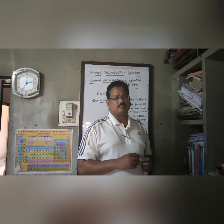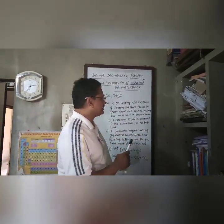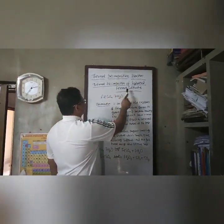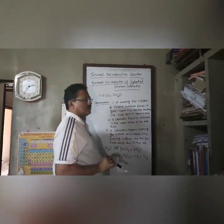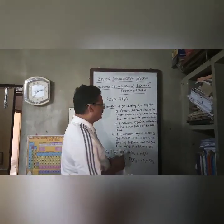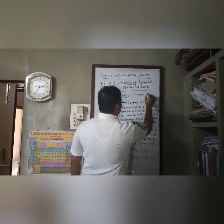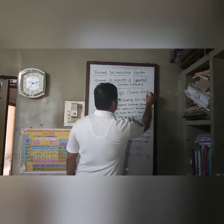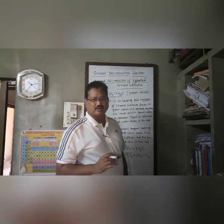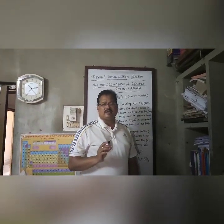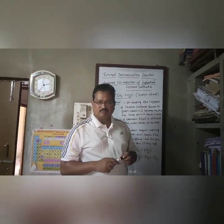Coming to the first decomposition, that is thermal decomposition. Here I am explaining about the thermal decomposition of hydrated ferrous sulfate, commonly called as green vitriol. Hydrated ferrous sulfate or green vitriol is light green in color. When you take it in a test tube and heat it strongly in a Bunsen flame, the following observations can be noted.